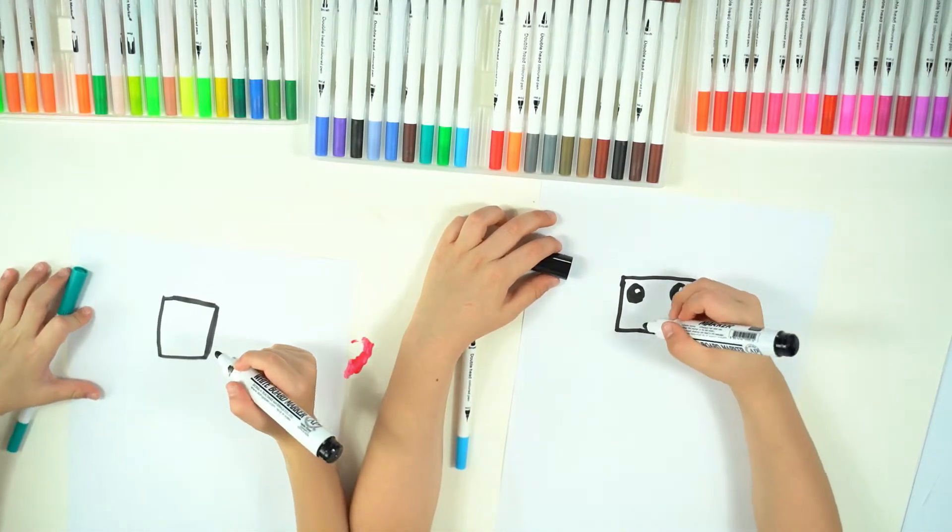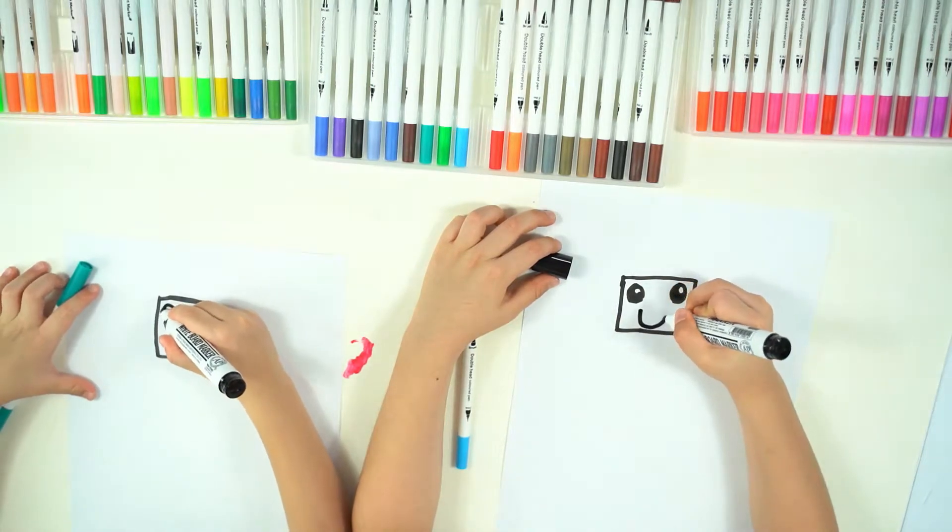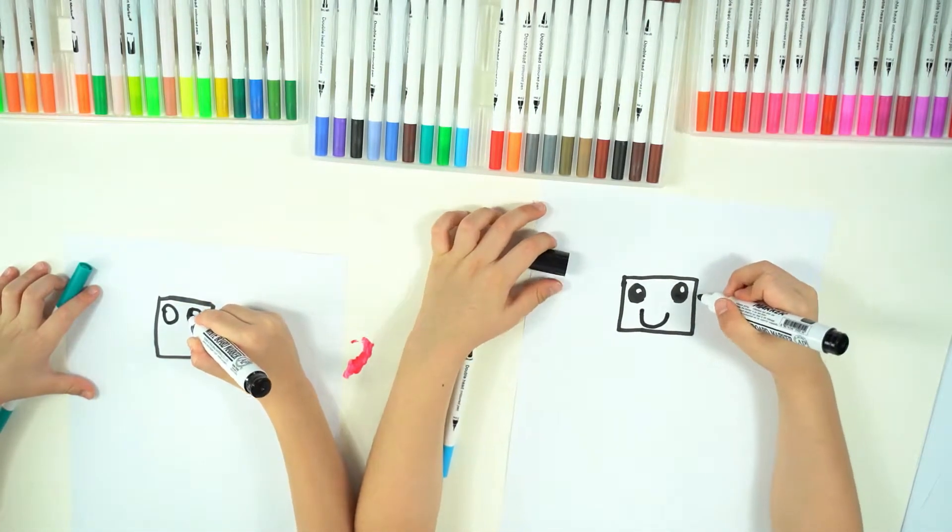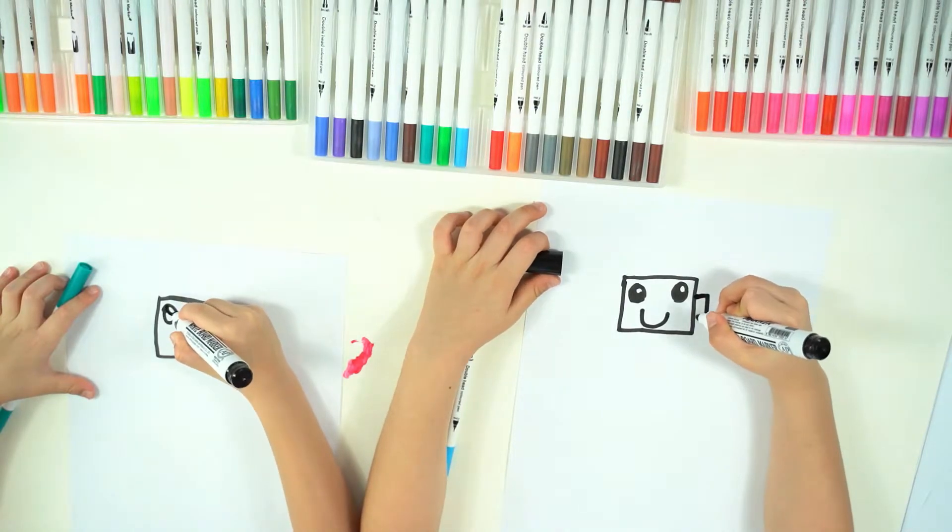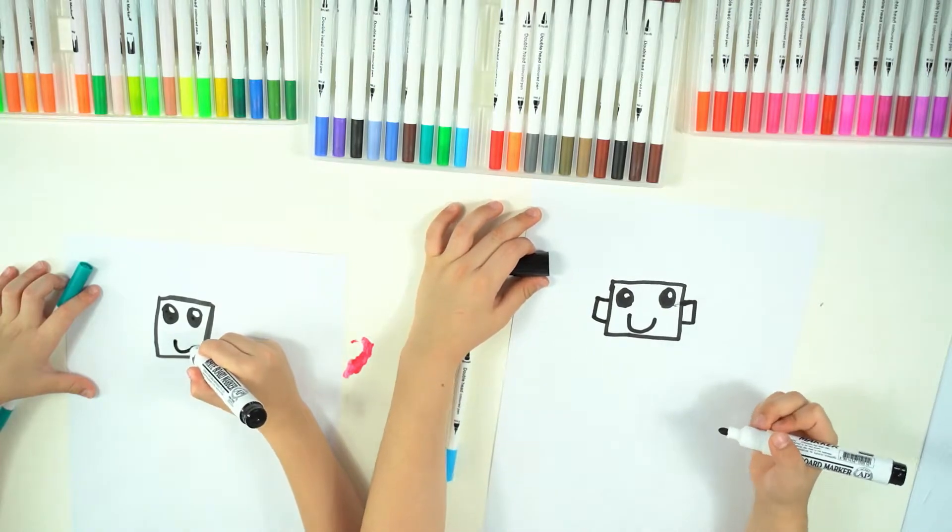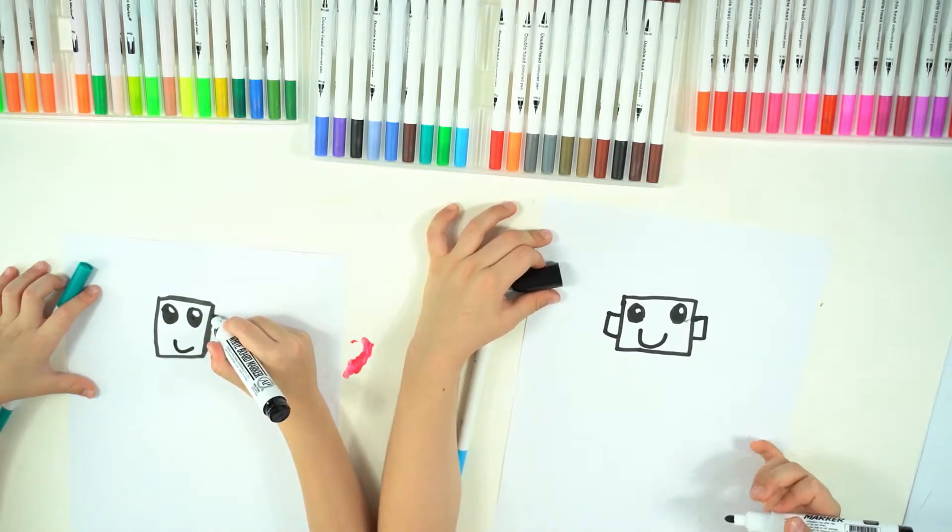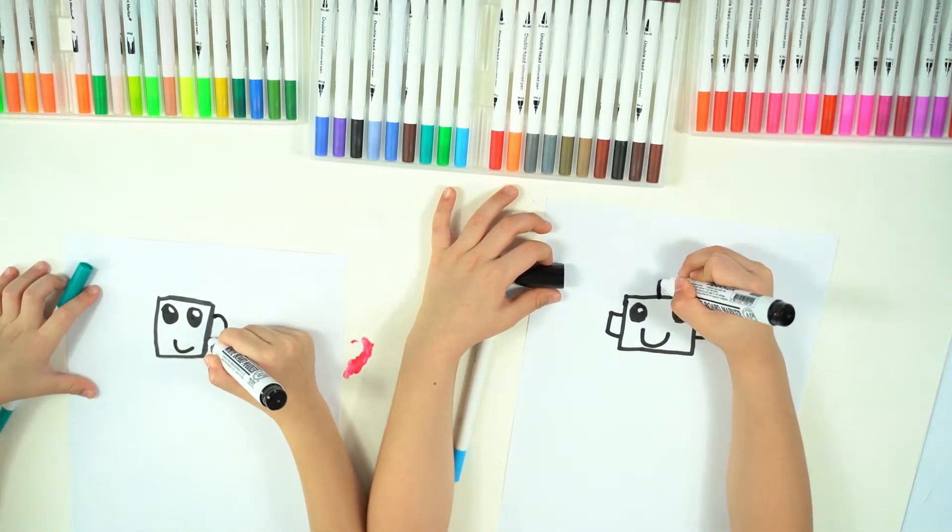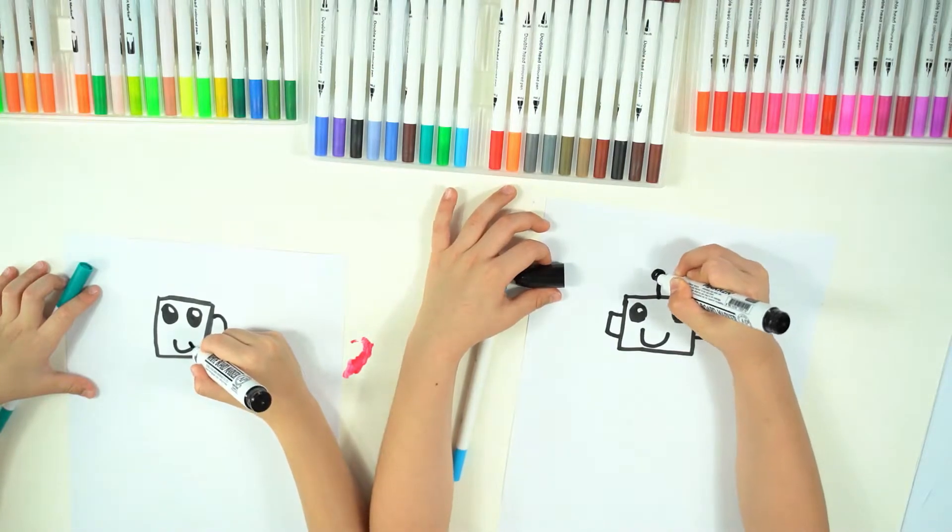Now a smile face. Then draw ears. Now this kind of looks like an antenna, but it's not. Color it then.